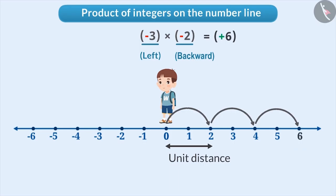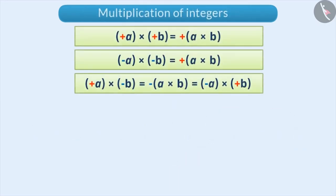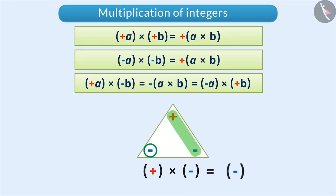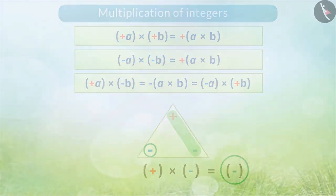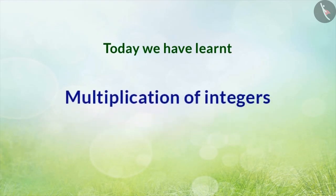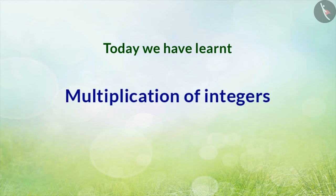Let's see a simple method to remember these rules. If you hide the signs of two integers used in multiplication, then the sign which is visible is included in the result. Today, we have learnt multiplication of integers. In the next video, we will learn some examples related to this topic.